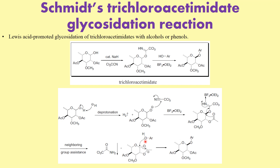The incoming alcohol or phenol attacks this particular position to give you the glycosidic linkage. The stereochemistry here is trans because this is an SN2-type substitution with inversion. The acetate group lends its anchimeric assistance — neighboring group participation — and that is why glycosidation bond formation is selective.